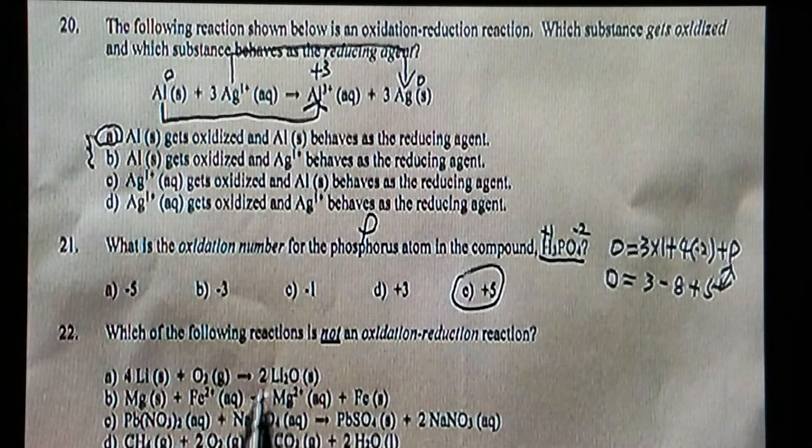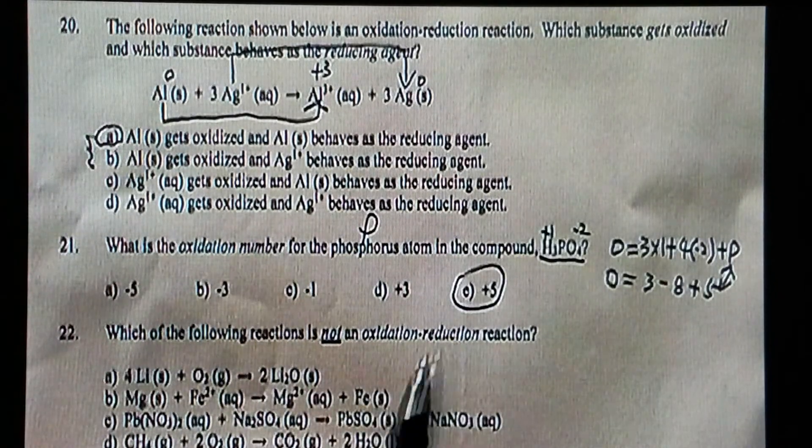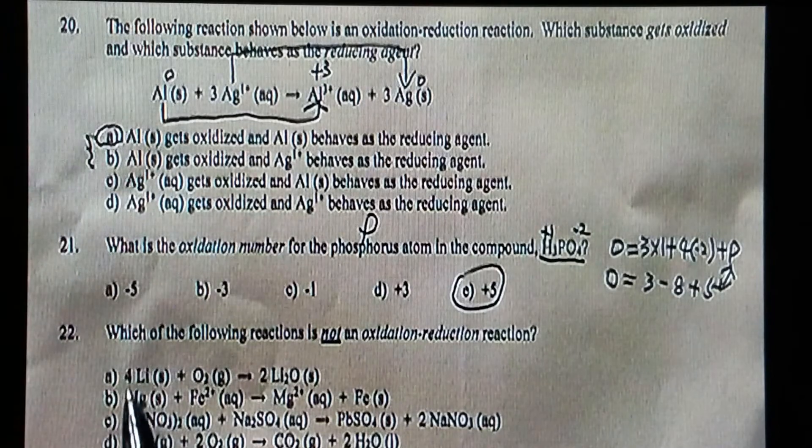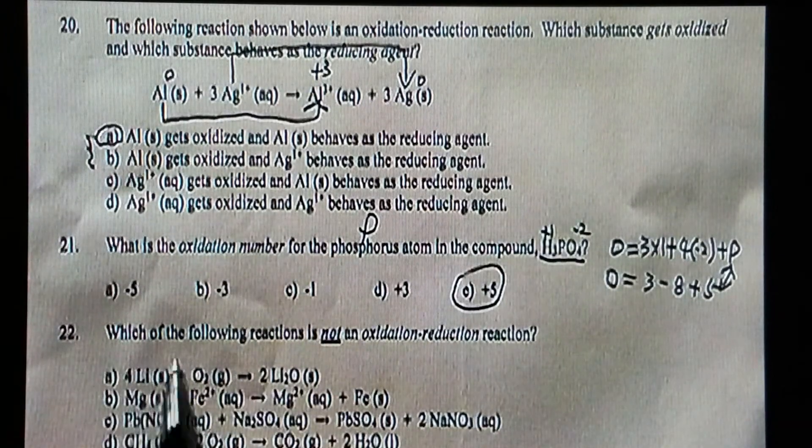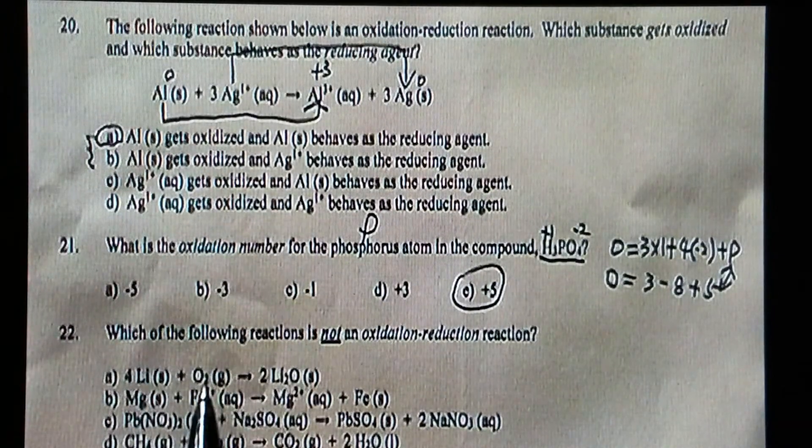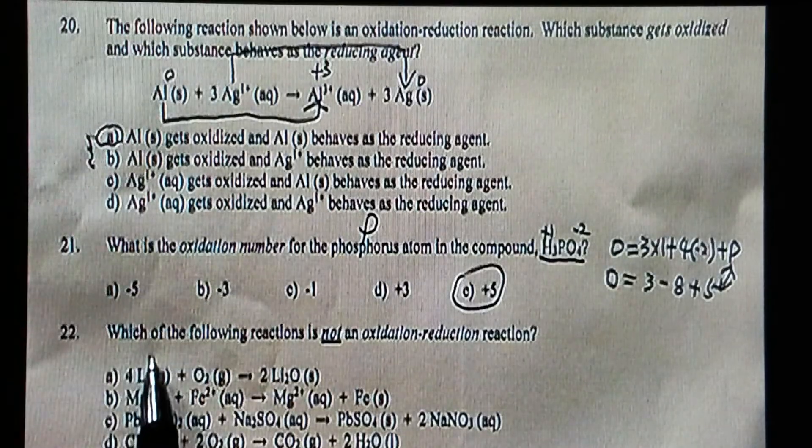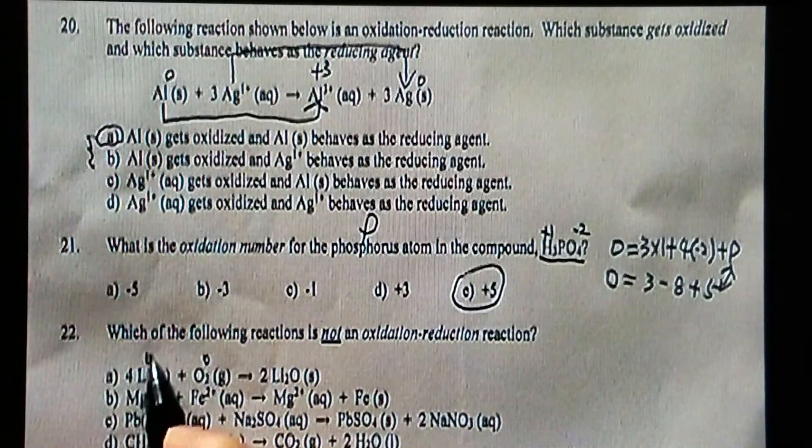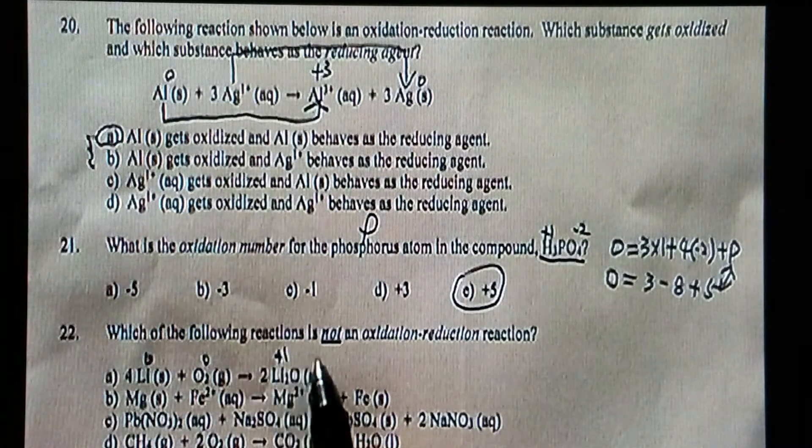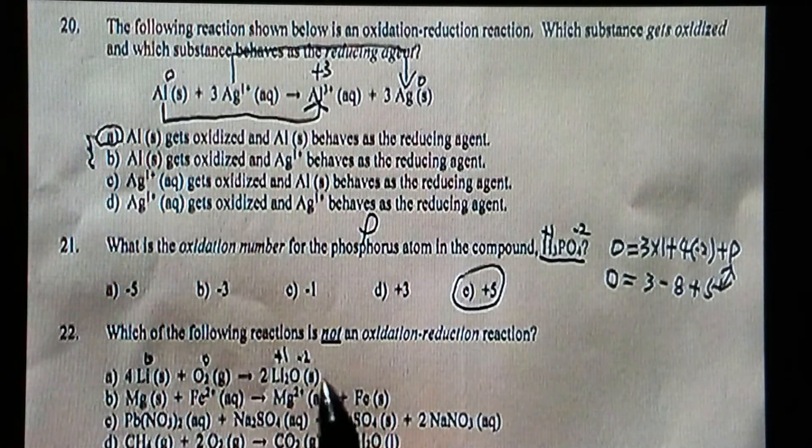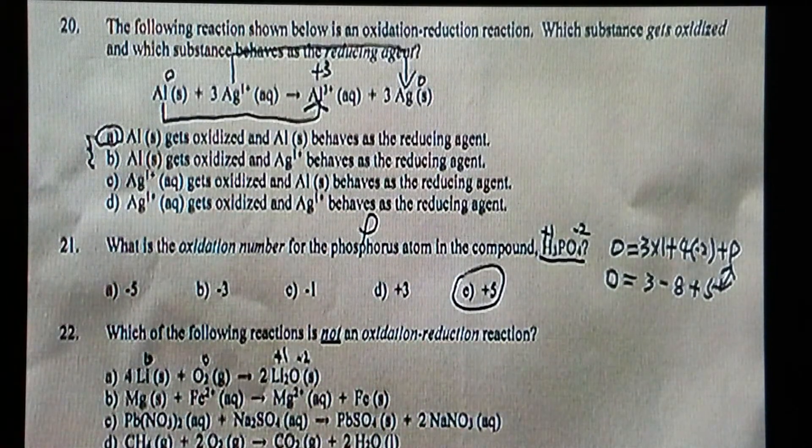So obviously there should be just one such reaction. We just take a look at one by one first. Here lithium, oxygen, and that's zero, that's zero. And here obviously lithium is positive one, oxygen is negative two, that's oxidation reduction reaction.